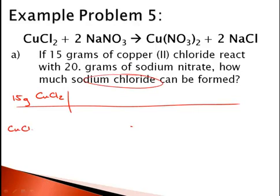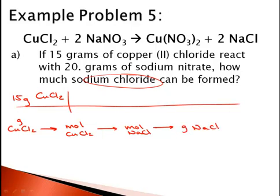We'll go from copper II chloride — from mass of copper II chloride to moles of copper II chloride using molar mass, then from moles of copper II chloride to moles of NaCl using our mole ratio. The molar mass of copper II chloride is 63.55 plus 2 times 35.45, which gives us a molar mass of 134.45 grams per mole of copper II chloride.